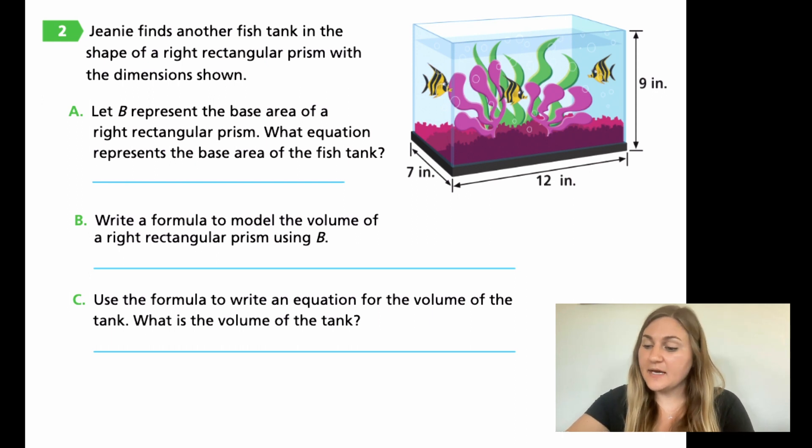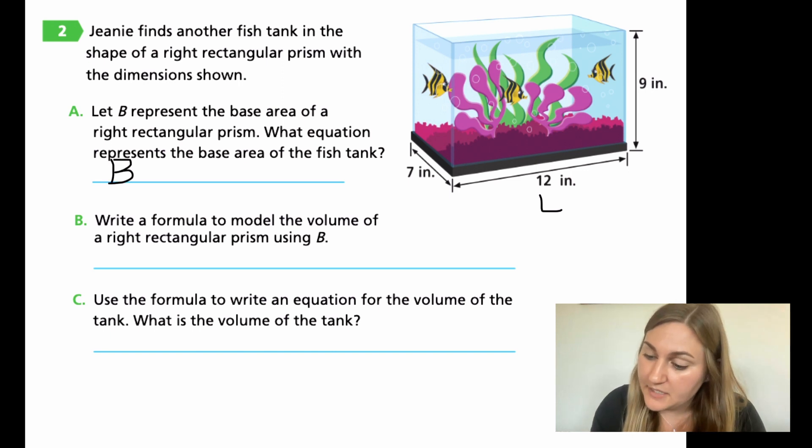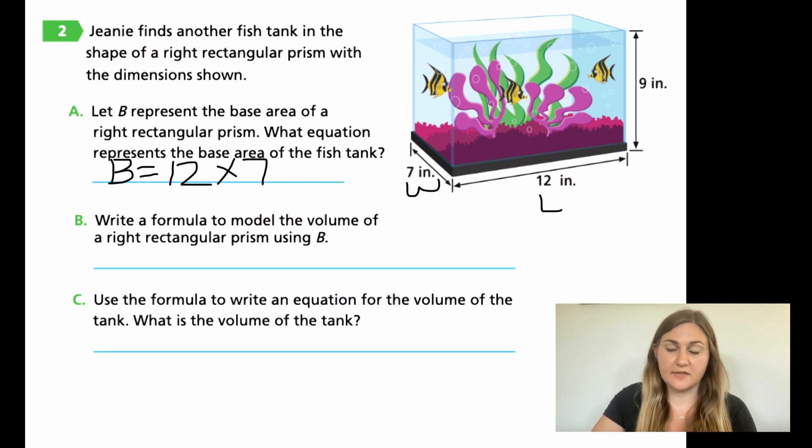Coming back to solve these problems. So for A, let B represent the base area of the right rectangular prism. What equation represents the base area of the fish tank? So I know that my base equals my length times my width, and my length right here is 12. So what I'm going to do is I'm going to say B is equal to 12 as my length, and my width here is 7. So 12 times 7 is going to be my base, my length times my width.